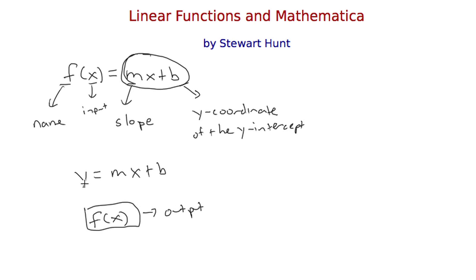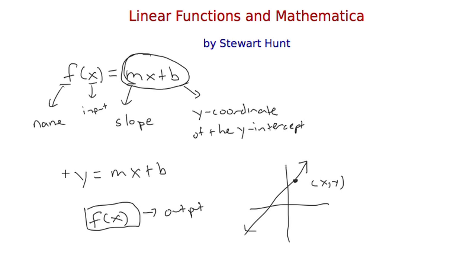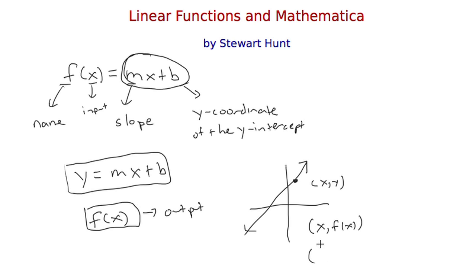f of x, which is the output, is also y — the second coordinate. The first coordinate is the input, the second coordinate is the output. So when you graph this, the points on the graph form a line. The points on the line have x and y coordinates — x comma y — and y is mx plus b. So the second coordinate is generically called y, but when dealing with a specific function it takes on a value dependent on x. Points on the line have the form x comma f of x, or equivalently x comma mx plus b.